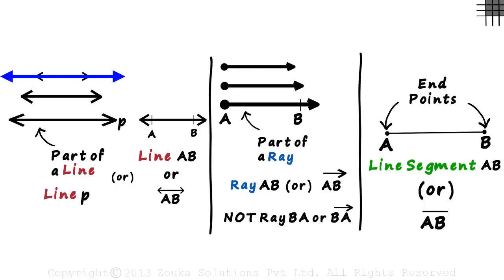A line extends indefinitely in both directions. A ray starts at its end point and goes indefinitely in one direction. And a line segment is a fixed part of a line.